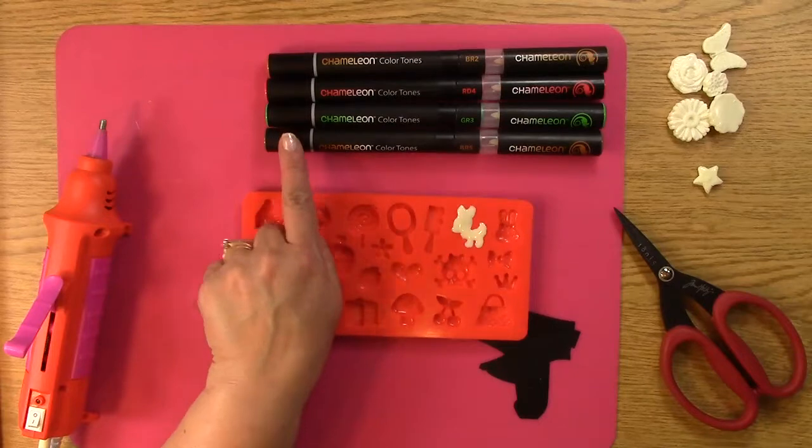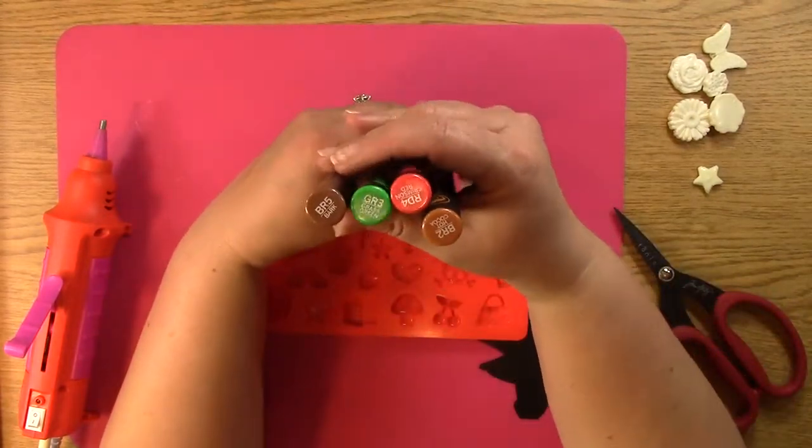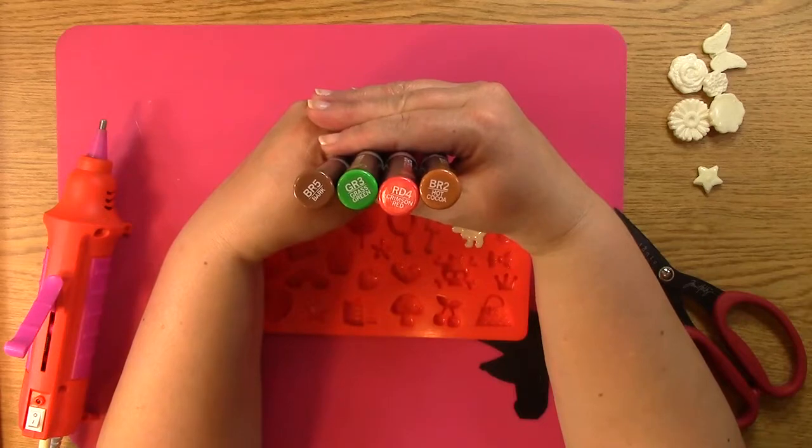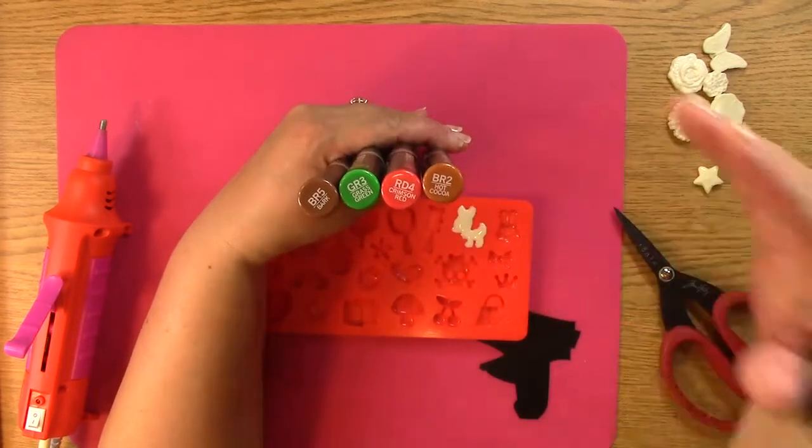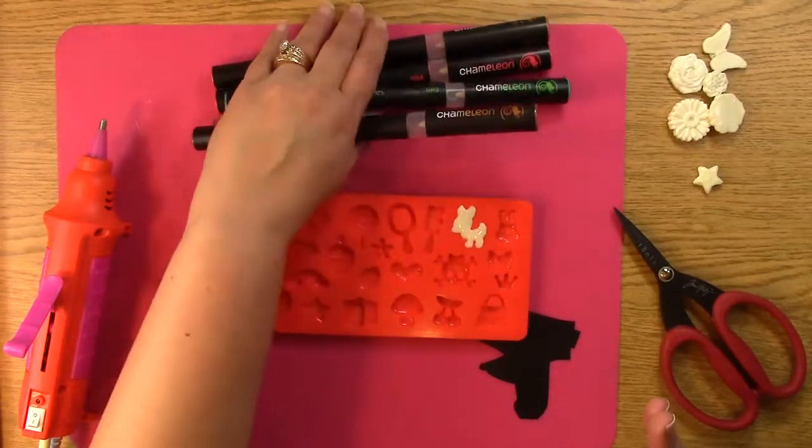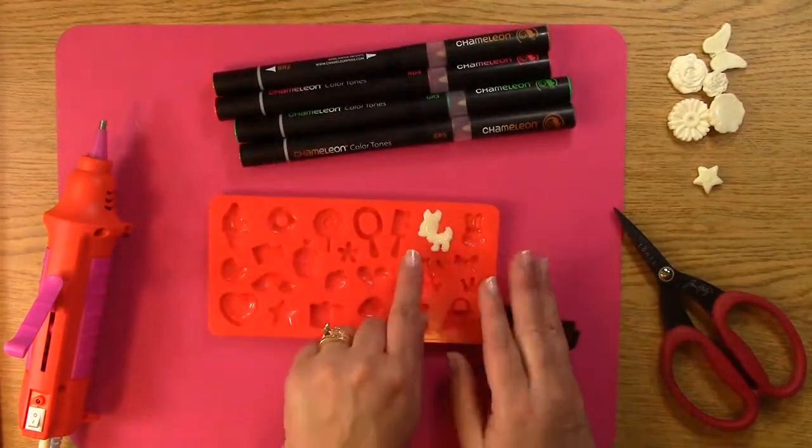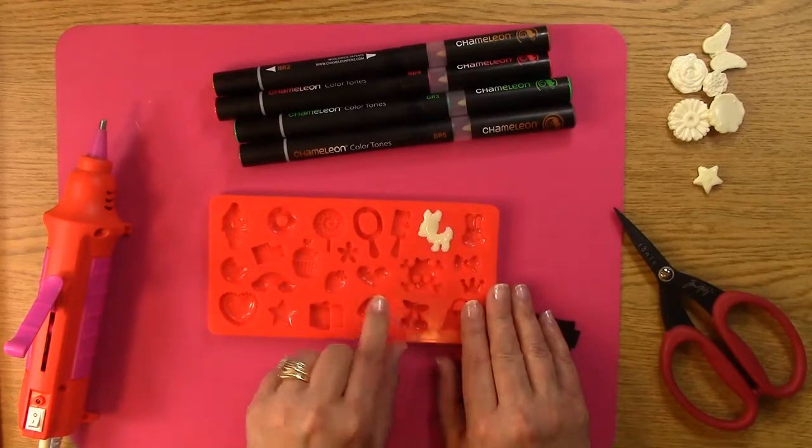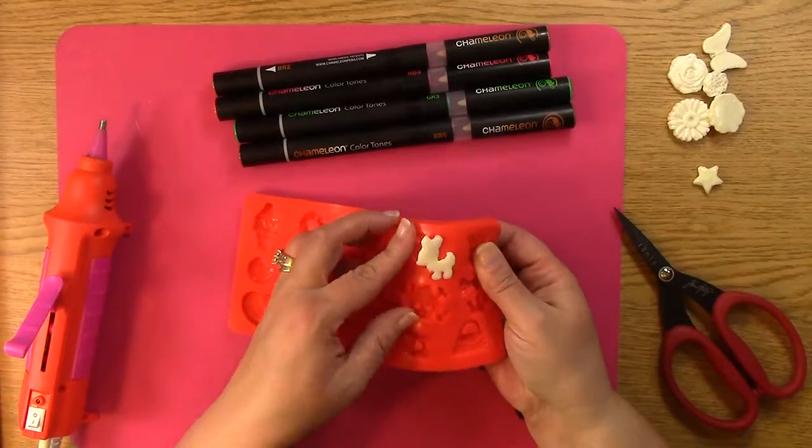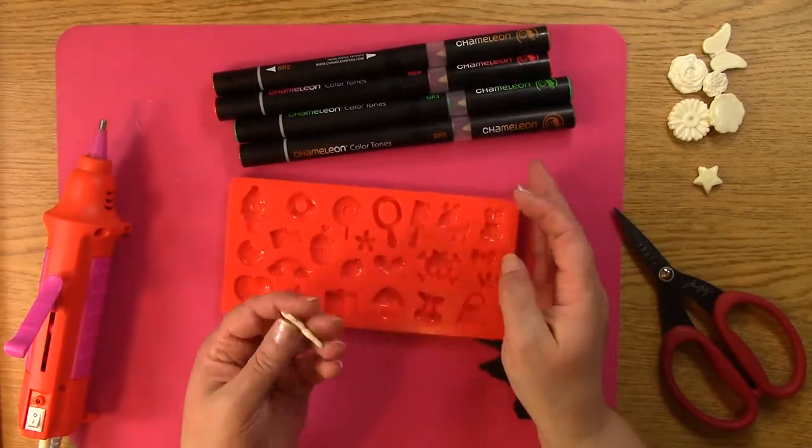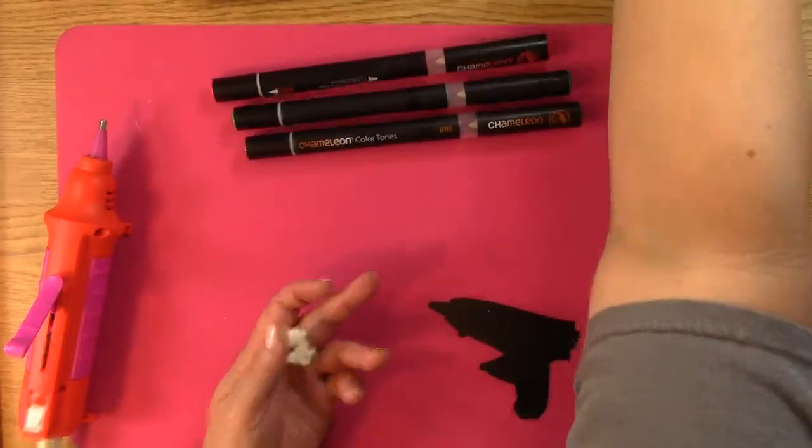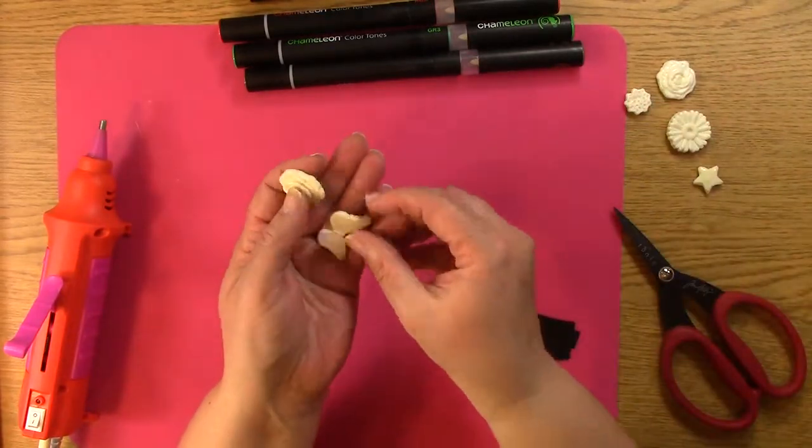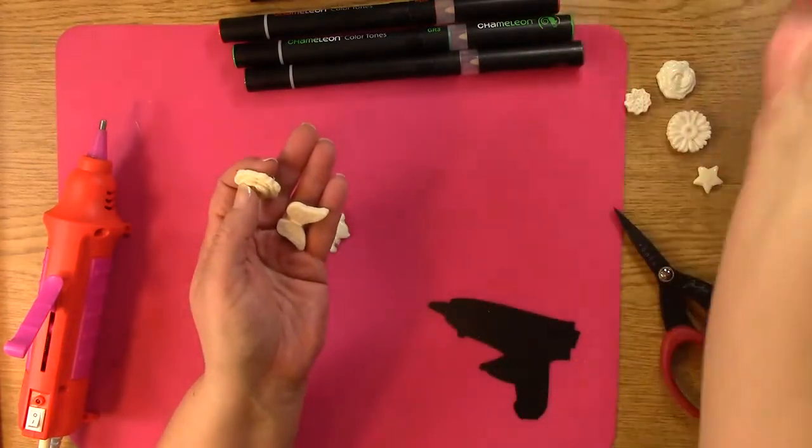We're using chameleon pens - the BR5, GR3, RD4, and BR2. Those are the colors we're using to color our cute little reindeer. Since I thought it was appropriate at that time of the year, I thought it would be good to do that right now. Where we left off is I had just created this Mod Podge Mod Melter reindeer creation. I'm just going to pop it out - it's very simple. It's silicone so it doesn't stick, it's perfect.